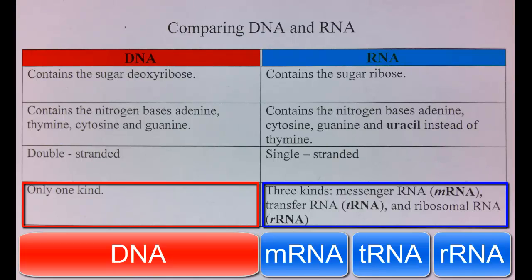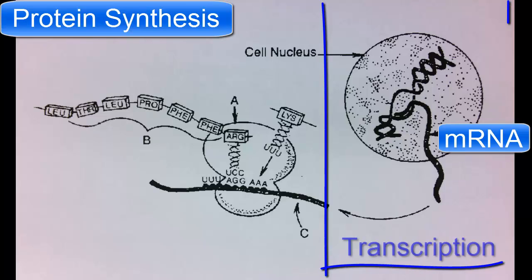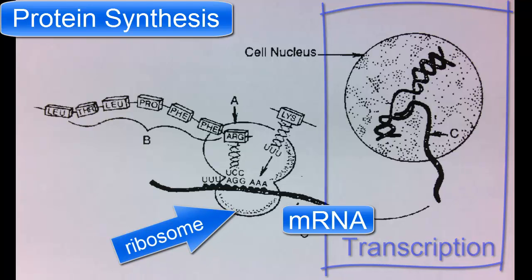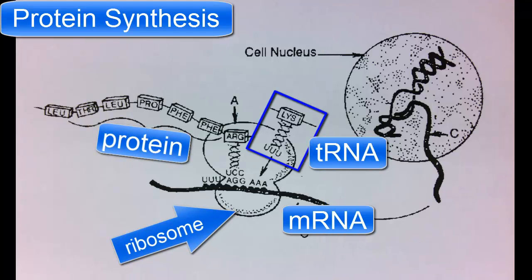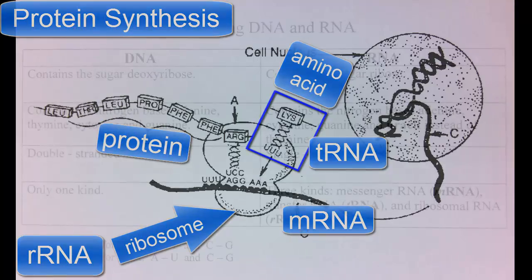Just a quick review on the difference between the three types. Messenger RNA is involved in copying the information in a gene during transcription and taking that information to the cytoplasm to a ribosome, where it can be translated into a protein. tRNA is transcribed from the DNA, but then moves to the cytoplasm and is involved in picking up amino acids and bringing the correct amino acids to the ribosome during translation. rRNA is transcribed in the nucleus and then leaves the nucleus and becomes part of the ribosomes in the cytoplasm.